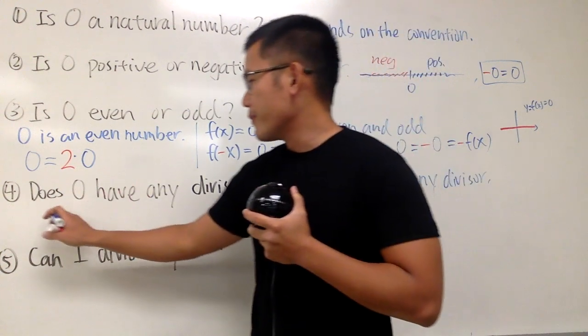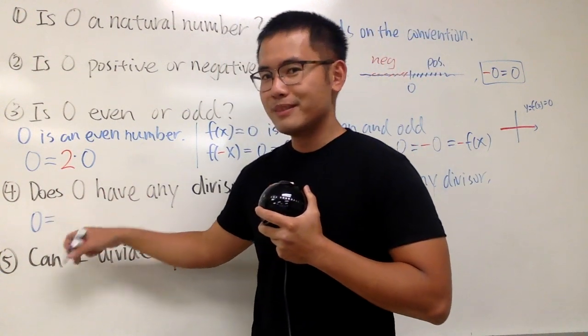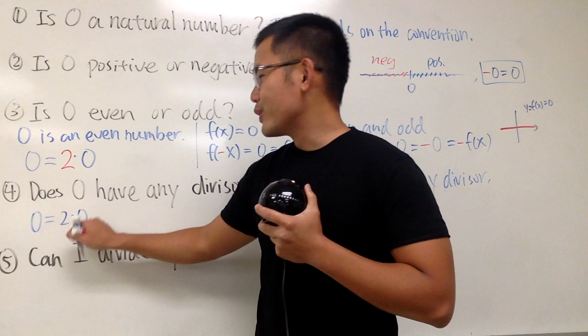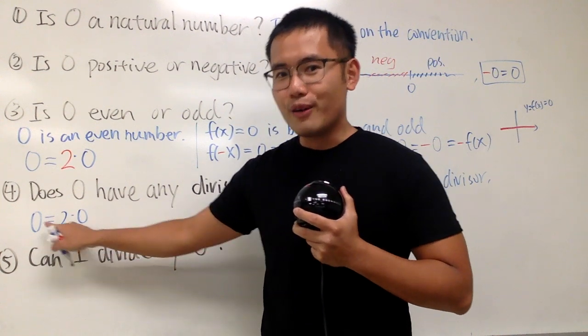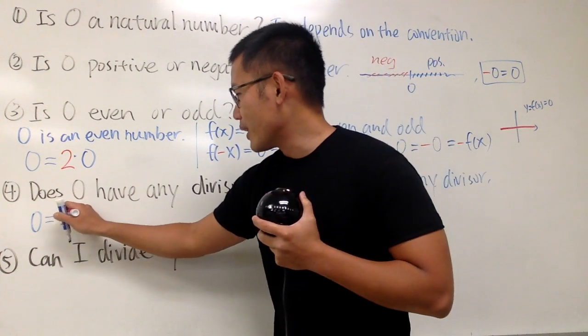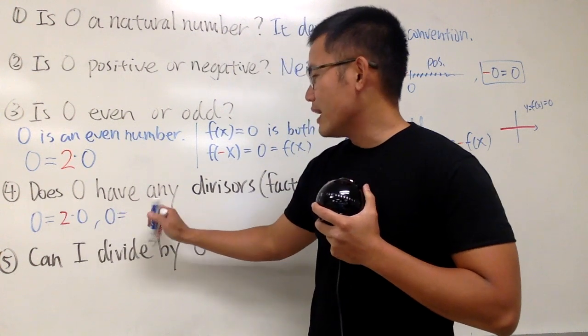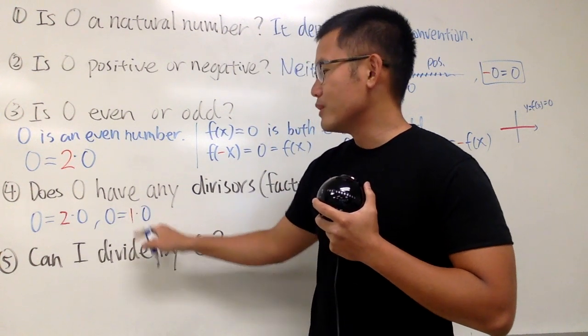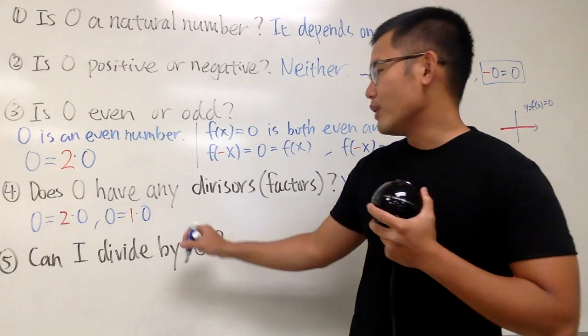But now, take a look of 0. We can write 0 as 2 times 0. So 2 is a divisor of 0, right? So we have 2 right here. And of course, we can also write 0 as 1 times 0. So 1 is a divisor as well.